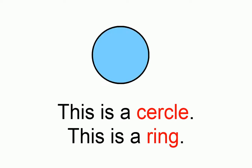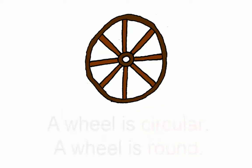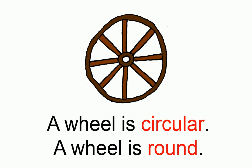This is a circle. This is a ring. A wheel is circular. A wheel is round.